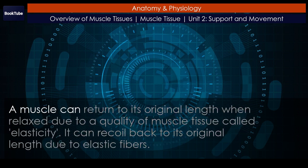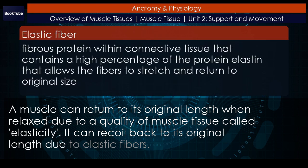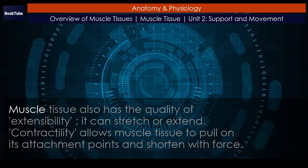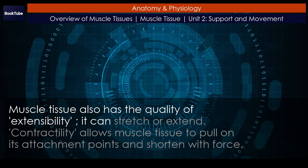A muscle can return to its original length when relaxed due to a quality of muscle tissue called elasticity. It can recoil back to its original length due to elastic fibers. Muscle tissue also has the quality of extensibility — it can stretch or extend. Contractility allows muscle tissue to pull on its attachment points and shorten with force.